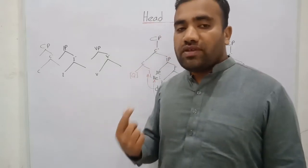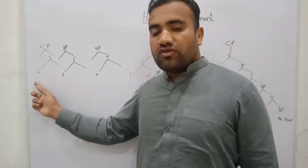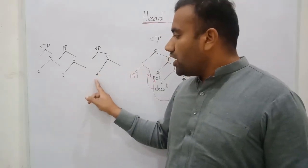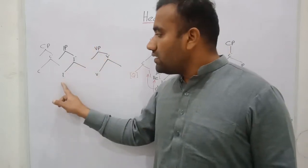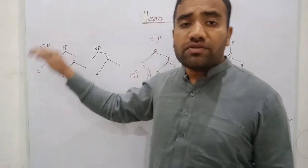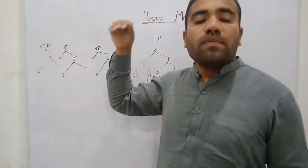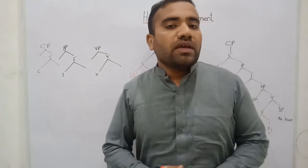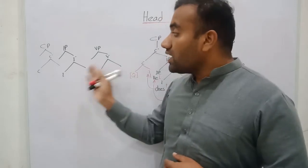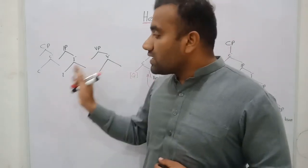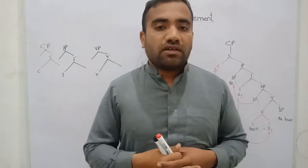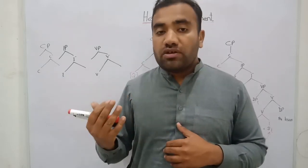One crucial property is that all these categories, all these projections, bear some head. The head V projects; the head I projects; the head C projects. These heads must project at the maximum level, which is the last level of the projection. Every category has some heads — whether the category is a lexical category or a functional category, all categories must bear some head.